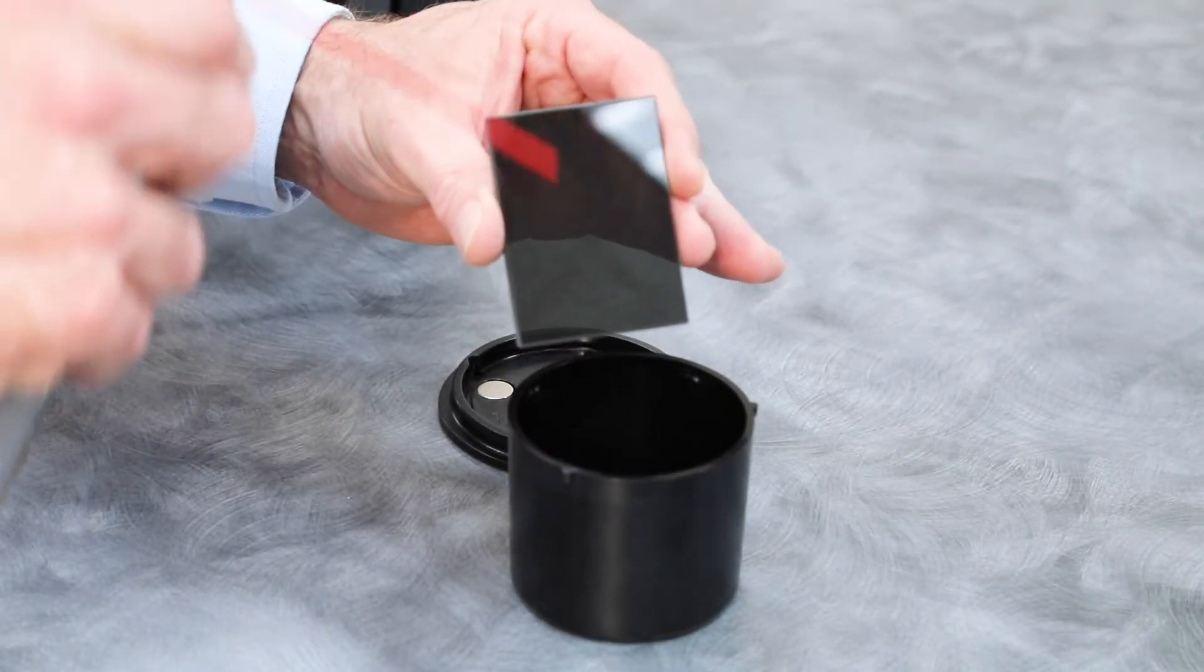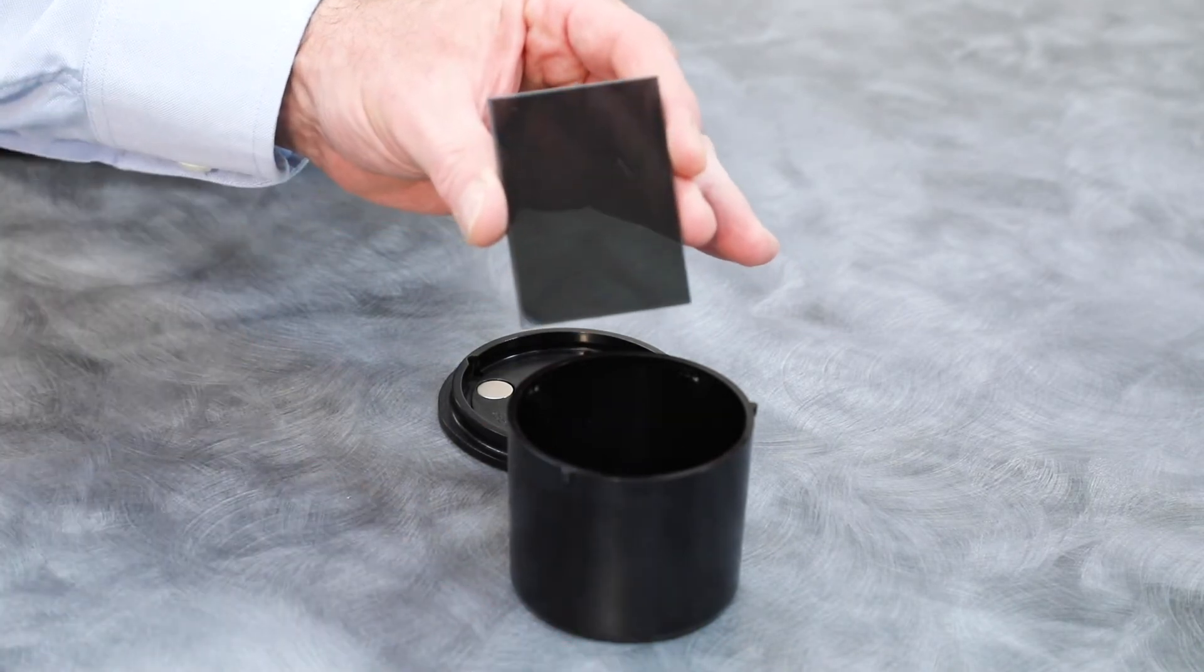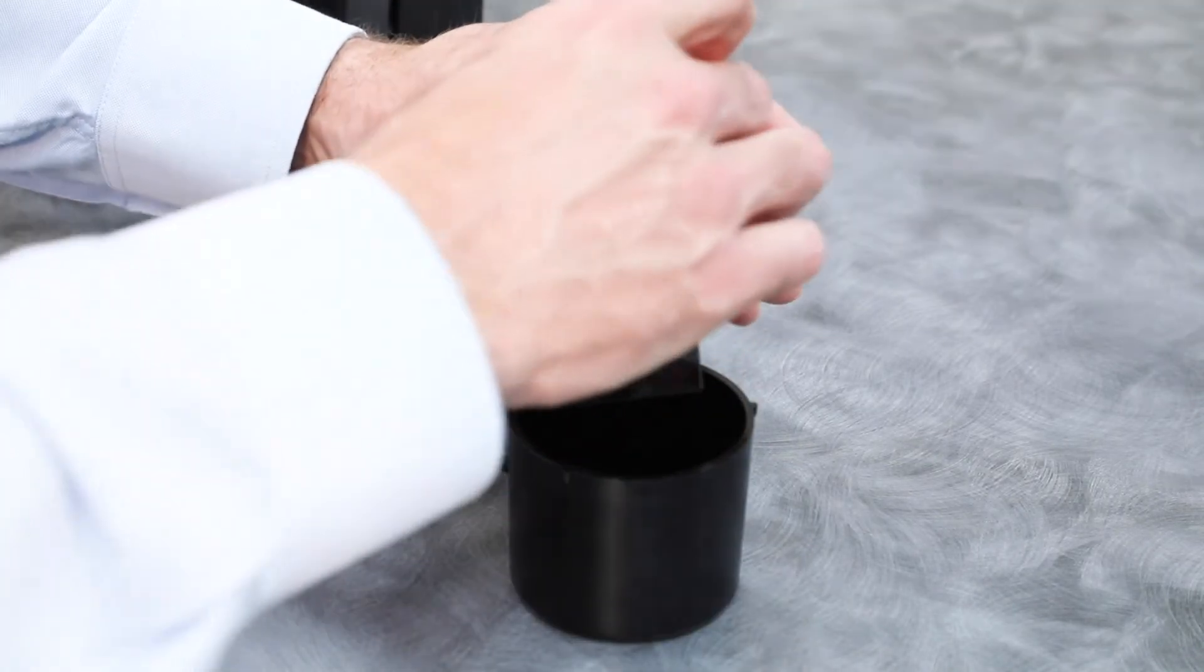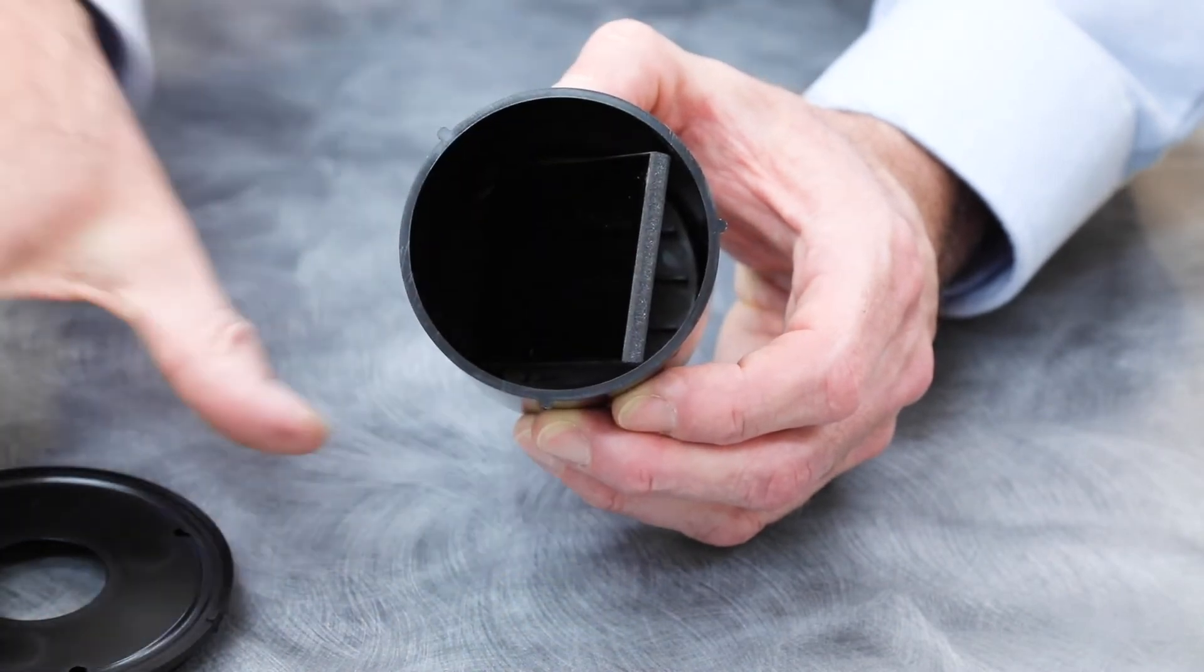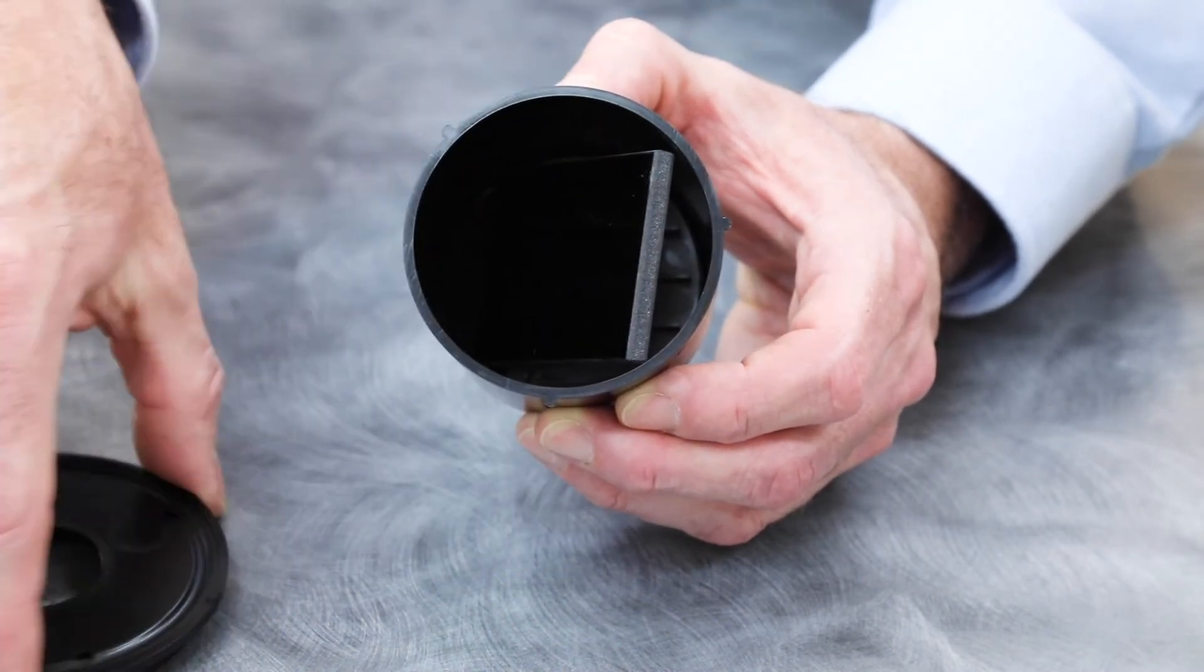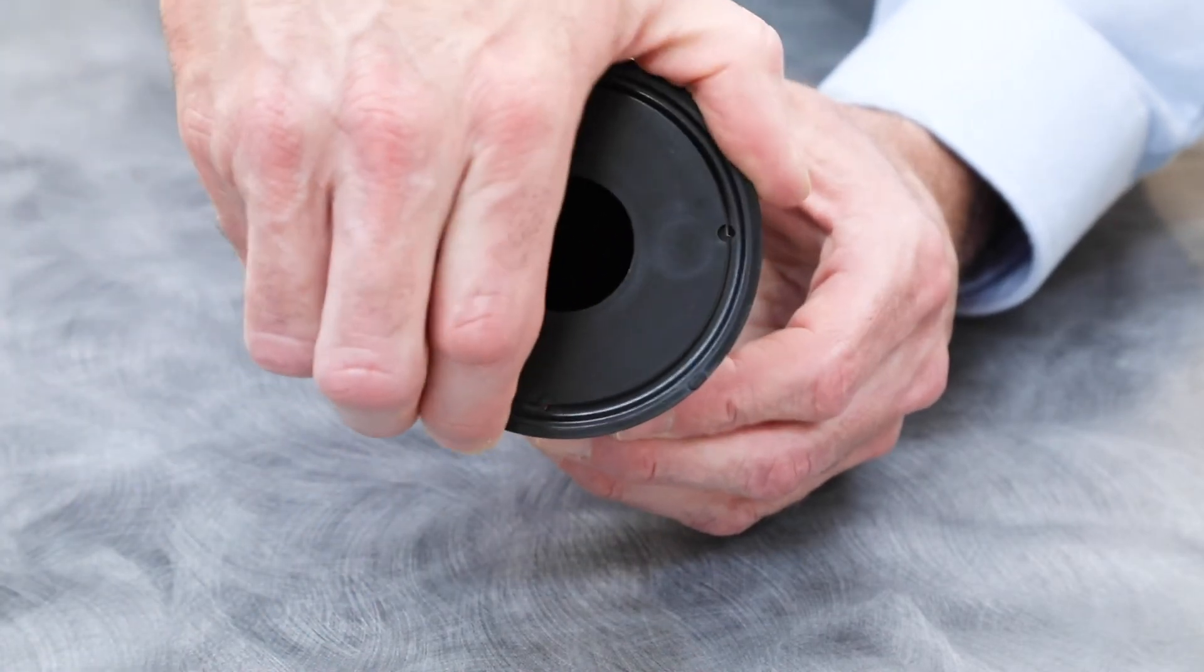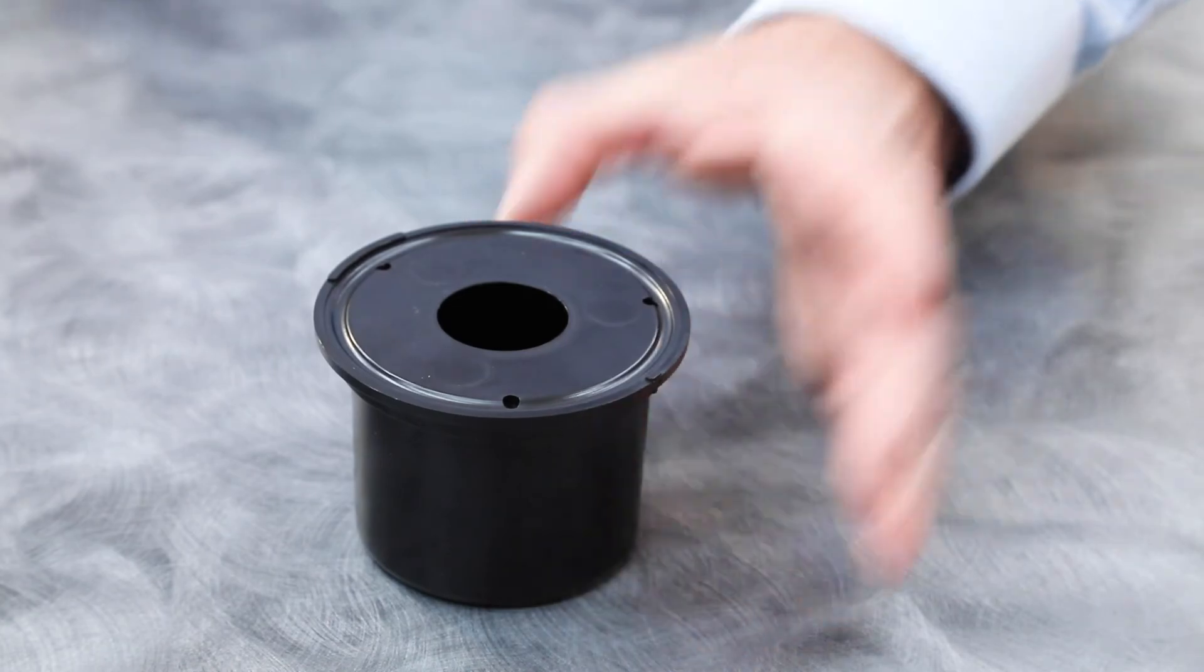Blow short bursts of clean, dry air across the trap glass and inside the trap. Then reinstall the black glass into the trap. The bottom edge should be resting against the felt pad at the bottom. Use the base tabs to position the trap back onto the base.